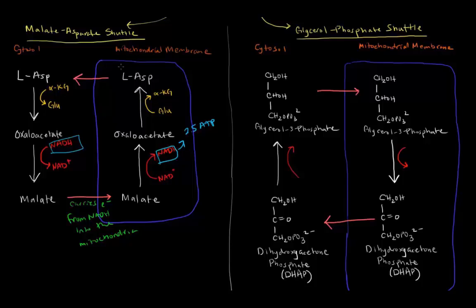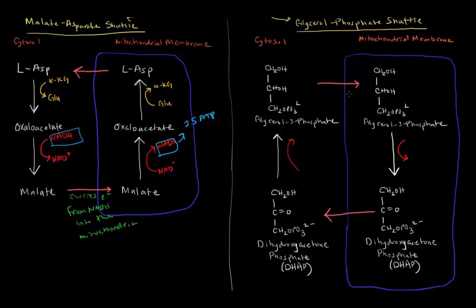Now how about the glycerol phosphate shuttle? In the glycerol phosphate shuttle, it's a little bit different. We start off with dihydroxyacetone phosphate, which if you recall is from glycolysis. We're going to reduce it to glycerol 3-phosphate, and in doing that, we're oxidizing NADH to NAD+.